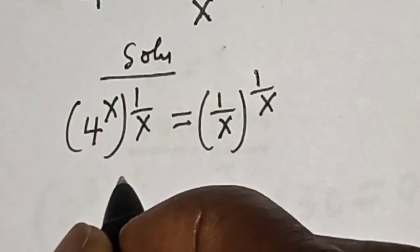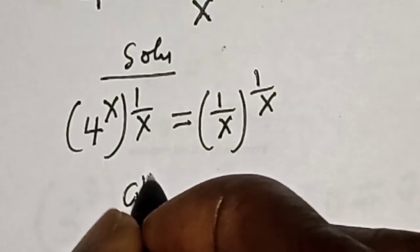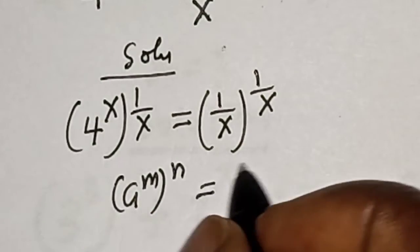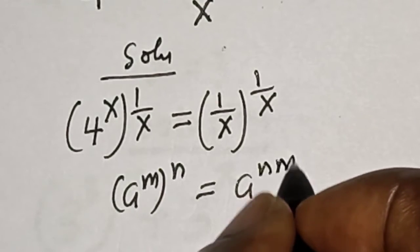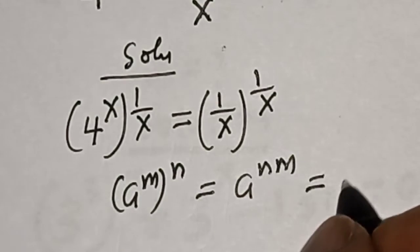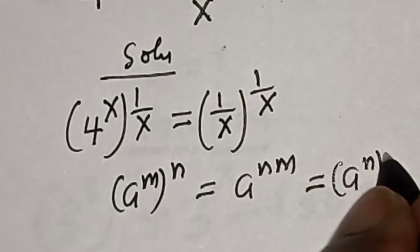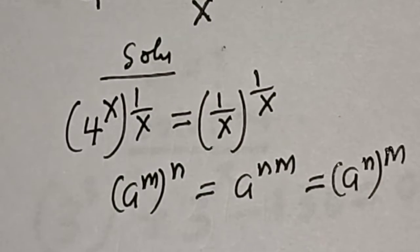Take note of this rule: a to the power m, to the power n, is equal to a to the power m times n, which is equal to a to the power n to the power m.